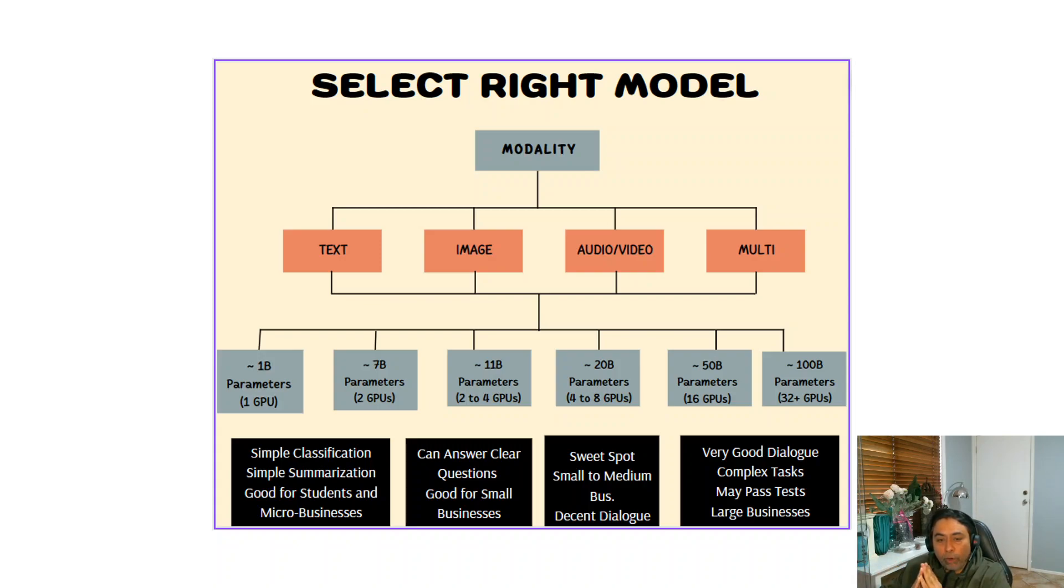Now after that, the real sweet spot comes in, which I believe will be used by most of the companies and organizations out there. That will be the 20 billion parameter models and it will require ideally around 8 GPUs, or maybe even slightly less, but 8 GPUs I have found is a sweet spot to give decent performance out of these models.